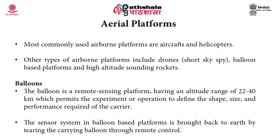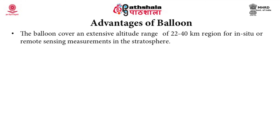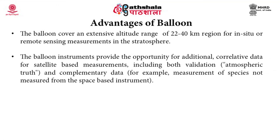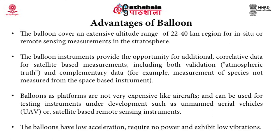The sensor system in balloon-based platforms is brought back to earth by tearing the carrying balloon through remote control. The advantages of balloons include coverage of an extensive altitude range of 22 to 40 kilometers for in-situ or remote sensing measurements in the stratosphere. Balloon instruments provide the opportunity for additional correlative data for satellite-based measurements, including both validation (atmospheric truth) and complementary data — for example, measurement of species not measured from space-based instruments. Balloons are not very expensive and can be used for testing instruments under development. They have low acceleration, require no power, and exhibit low vibrations.